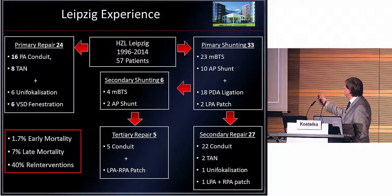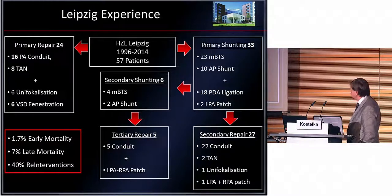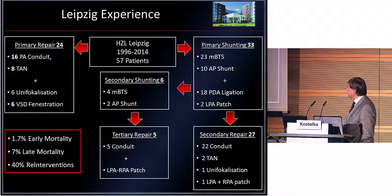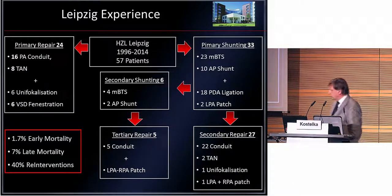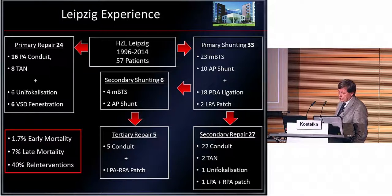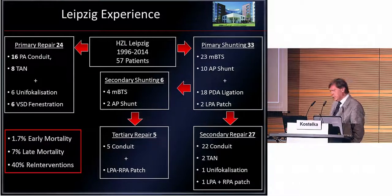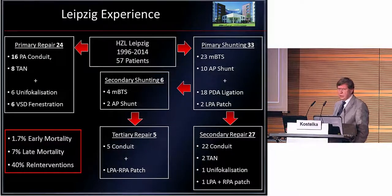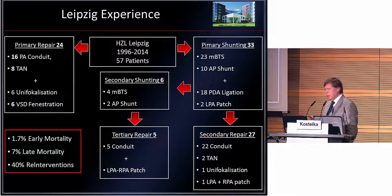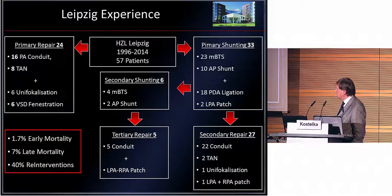Out of these 33 patients, we were able to perform secondary complete repair in 27 patients using a conduit in 22, transannular patch in one, unifocalization in one patient, and one patient with additional left and right pulmonary patch. Regarding conduit choice: in an optimal situation, we use a contegra graft; in a situation with high pressure, we use a shelhigh or Labcor conduit because they have better resistance to dilatation in high-pressure pulmonary artery situations.